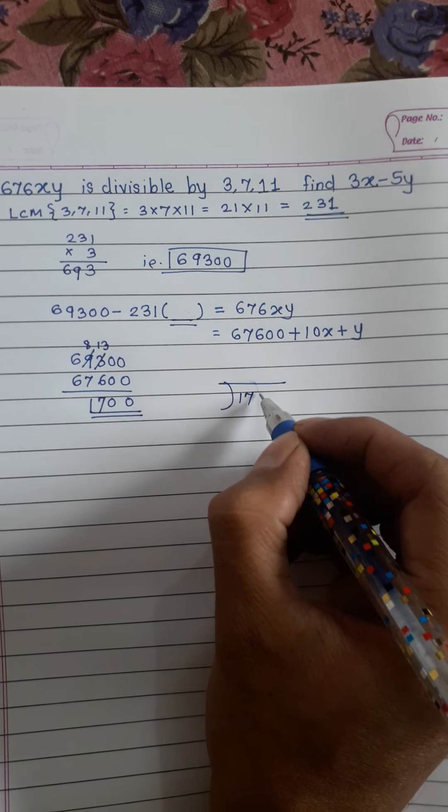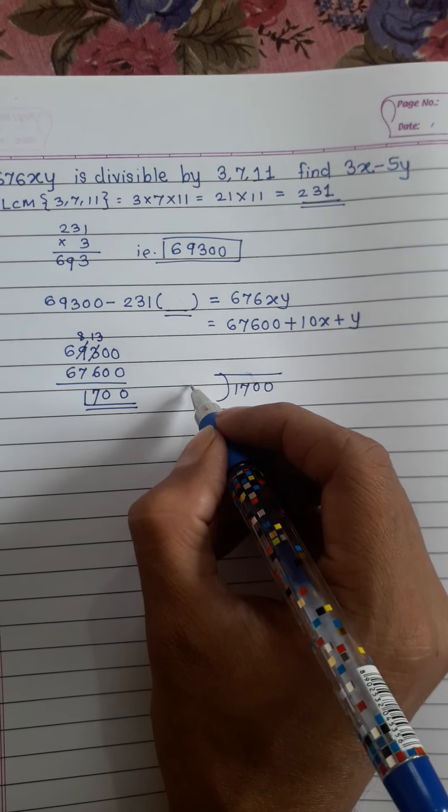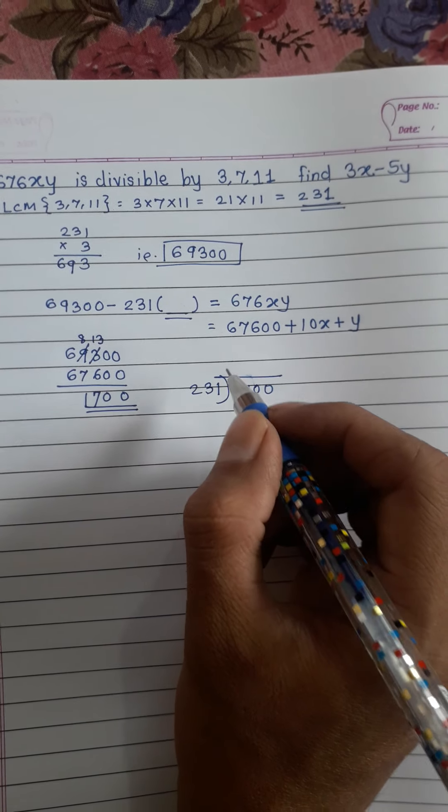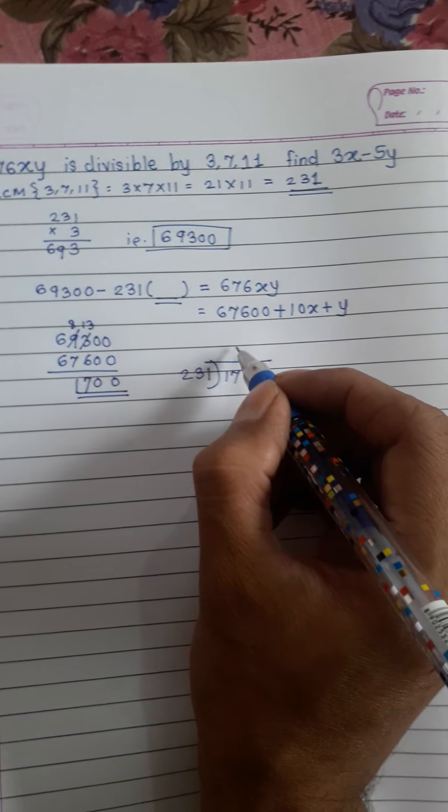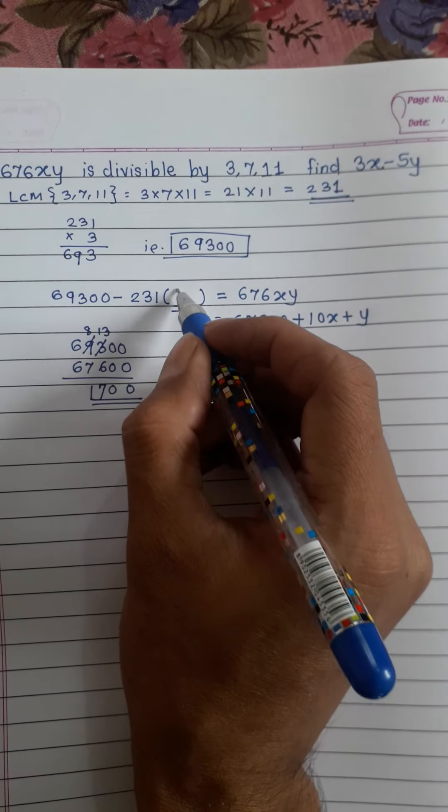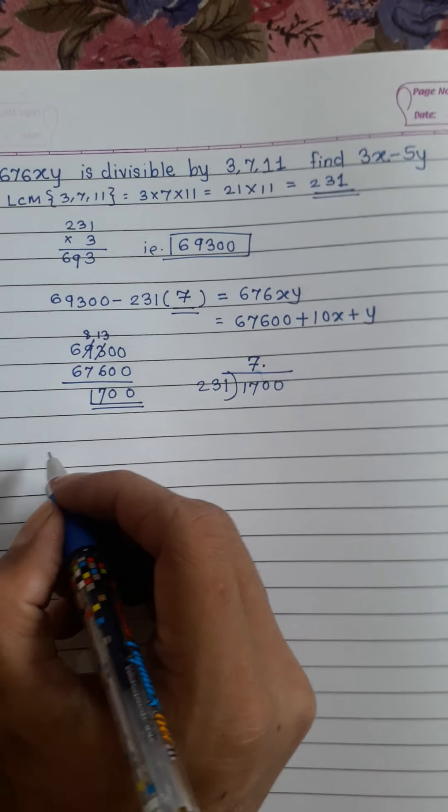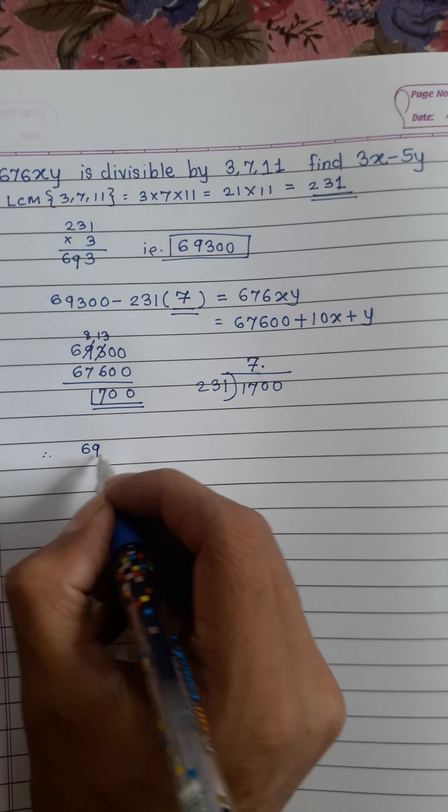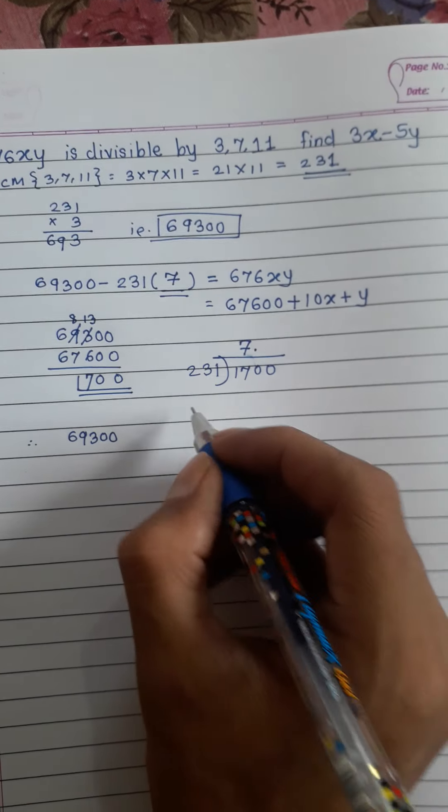will divide 1 7 double 0 by 231. We will get 7 point something. So, 7 times 231, this is 9 to 14, 15, 16, 7, 7 plus 9 3 double 0, and